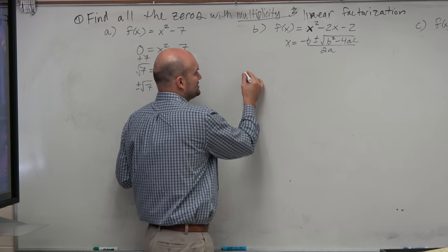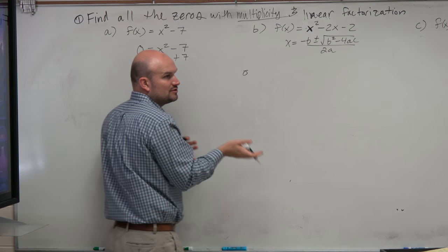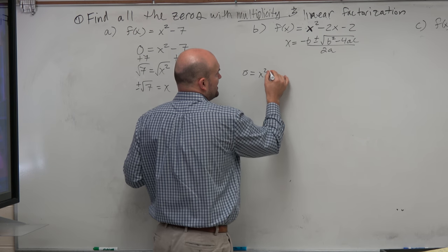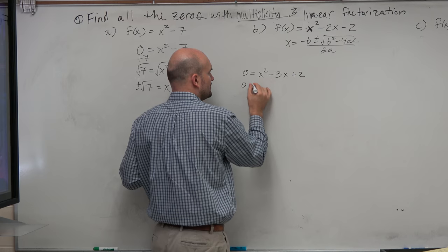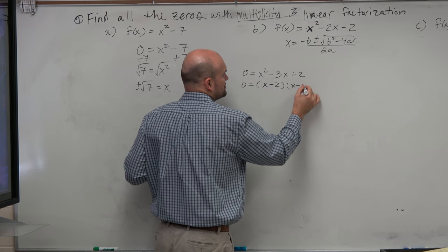Again, this goes back to how did we go from zeros to factors. Just a quick reminder: if I had x squared minus 3x, let's say plus 2, we were factoring this to x minus 2 times x minus 1.